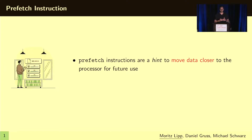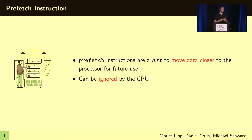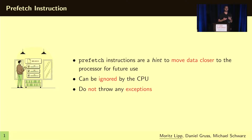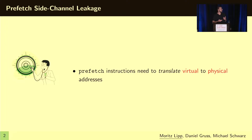A prefetch software instruction is a hint that allows the CPU to move data closer to the CPU for future usage. An interesting property is that it can be ignored by the CPU — the CPU is not necessarily required to execute this instruction. Another interesting property is that it does not throw any exception. You pass an address as an argument to the instruction, and the instruction internally needs to translate this virtual address to a physical address.